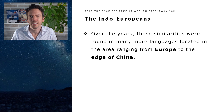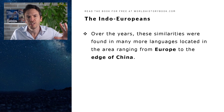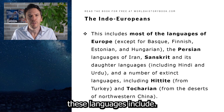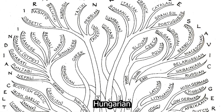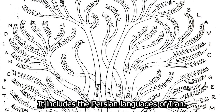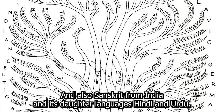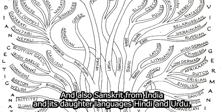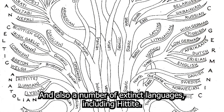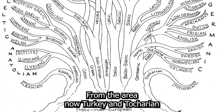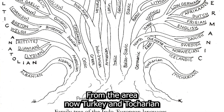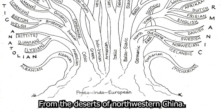Over the years, these similarities were found in many more languages, located in the area ranging from Europe to the edge of China. These languages include most of the European languages, except for Basque, Finnish, Estonian and Hungarian. It includes the Persian languages of Iran, and also Sanskrit from India and its daughter languages, Hindi and Urdu. And also a number of extinct languages, including Hittite from the area now Turkey, and Tocharian from the deserts of north-western China.